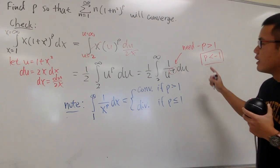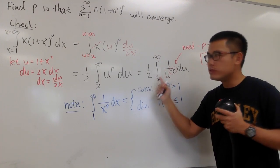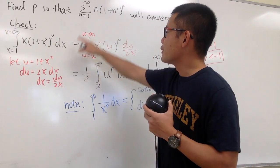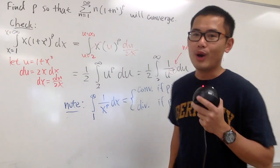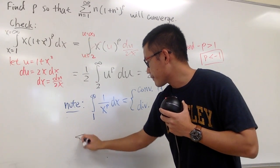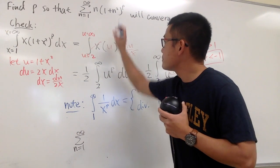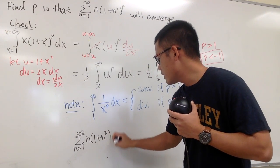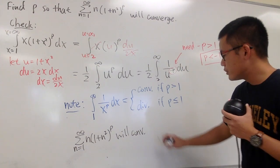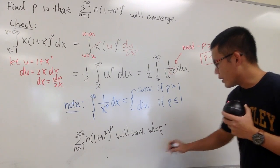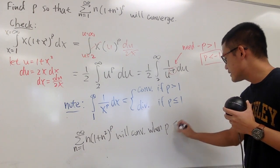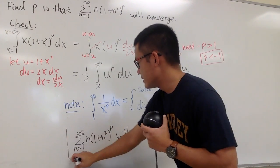p has to be less than negative 1. When p is less than negative 1, this improper integral will converge. So you can go back to here. This will converge, and you can also go back to here. This infinite series will also converge. Let me write this down: Sigma, when n goes from 1 to infinity, n times 1 plus n squared to the p's power, this infinite series will converge when p is less than negative 1.